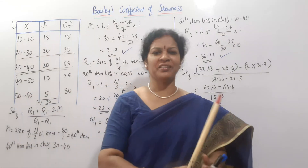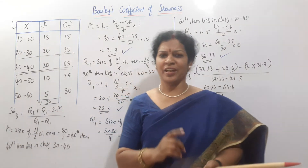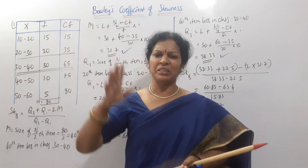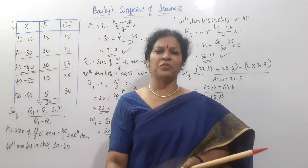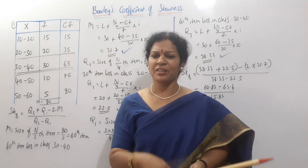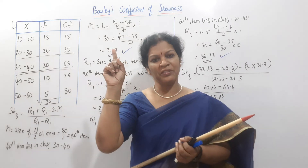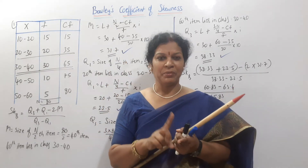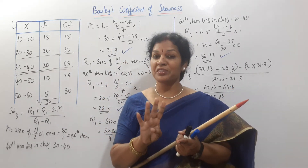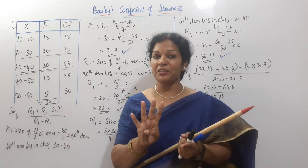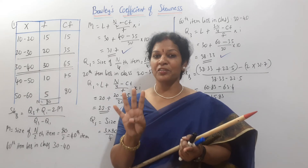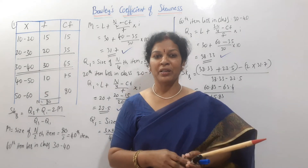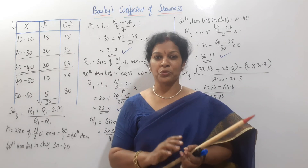Easy, right? Carl Pearson skewness is easy. We don't need measures of dispersion separately. Carl Pearson uses arithmetic mean, median, mode, and standard deviation. Once you get those calculations, you can apply the formula.